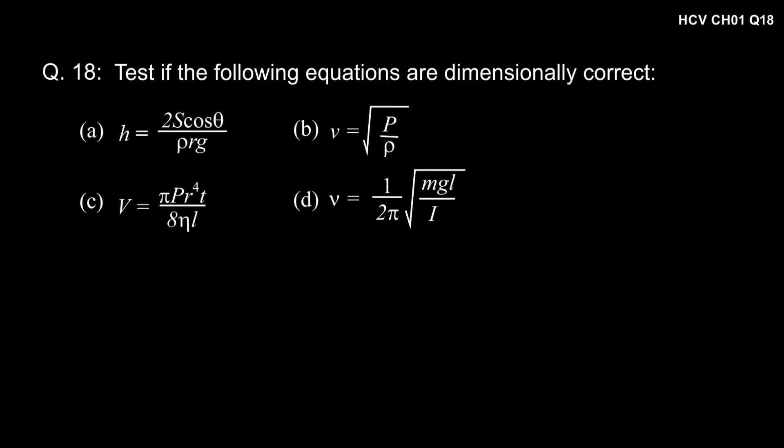Test if the following equations are dimensionally correct. A: H is equal to 2s cos theta divided by rho Rg. B: V is equal to root under P by rho. C: V, that is volume, is equal to pi P r to the power 4 t divided by 8 eta L. D: Frequency nu is equal to 1 by 2 pi root under mg by I.